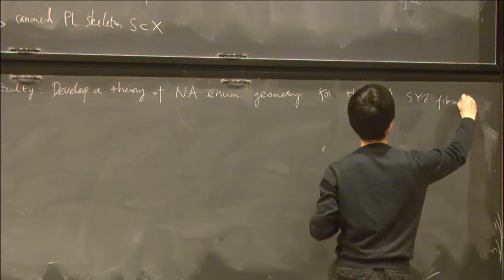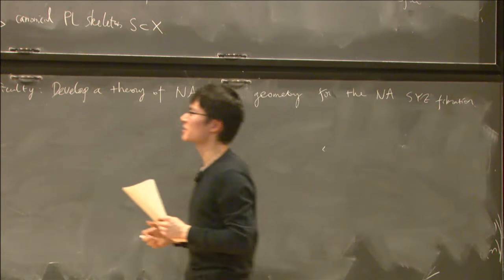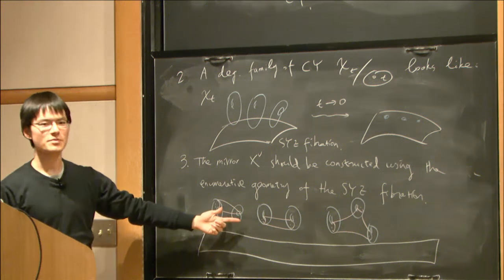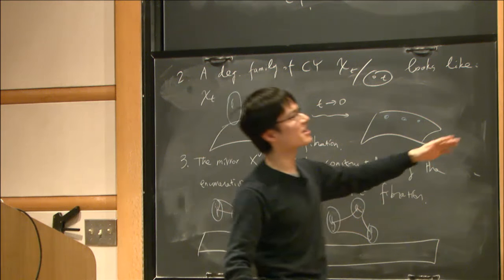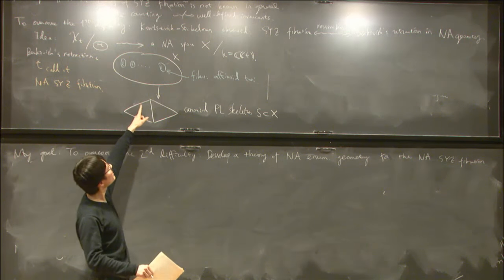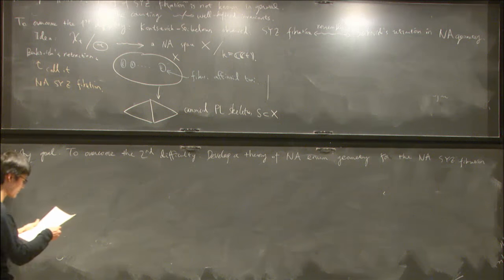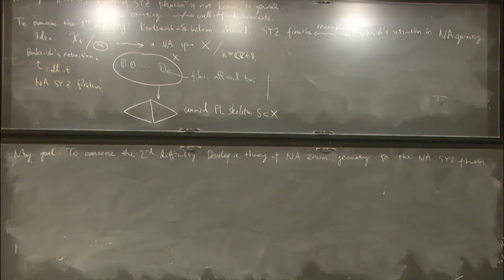In other words, we would like to have a theory that enables us to count curves with boundaries inside this non-Archimedean space X and with boundaries on these affinoid tori fibers. Now let me describe my progress so far and some ongoing works.